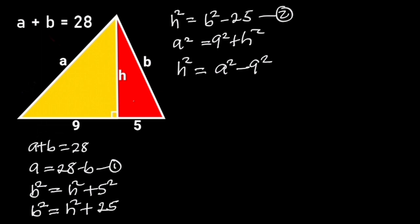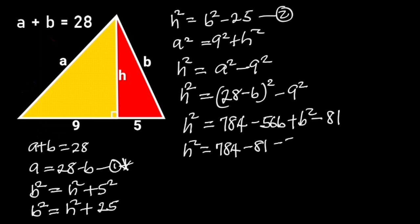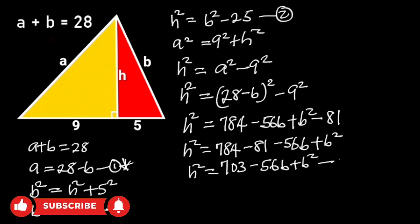But A is equal to 28 minus B in equation 1. Substituting A equals 28 minus B in this equation will give us H squared is equal to (28 minus B) squared minus 9 squared. Simplifying the terms on the right side gives H squared is equal to 784 minus 56B plus B squared minus 81. Collecting the like terms gives H squared is equal to 703 minus 56B plus B squared. Let this be equation 3.